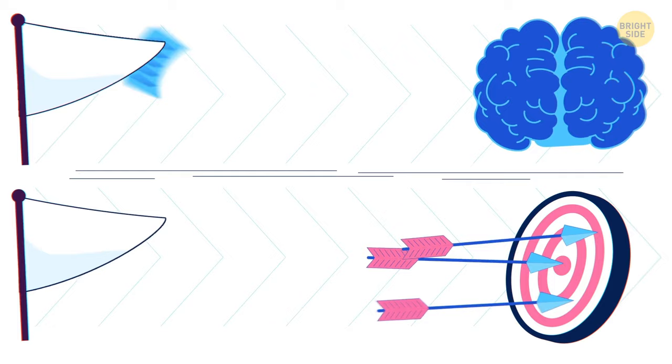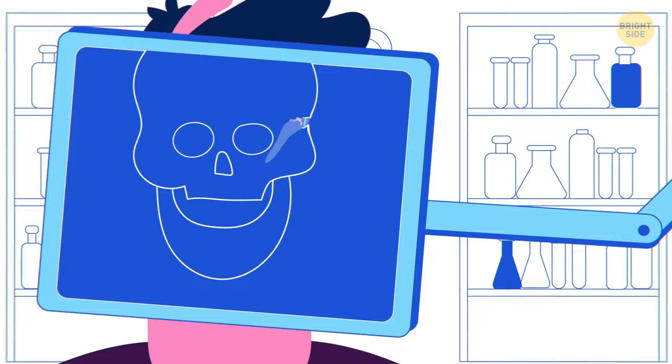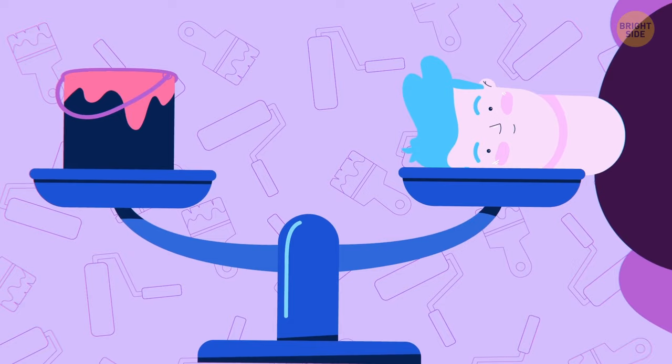The smallest bone and muscle in your body are both in your ear. Your head weighs as much as a gallon of paint, 10 pounds. And for me, it's almost as useful.